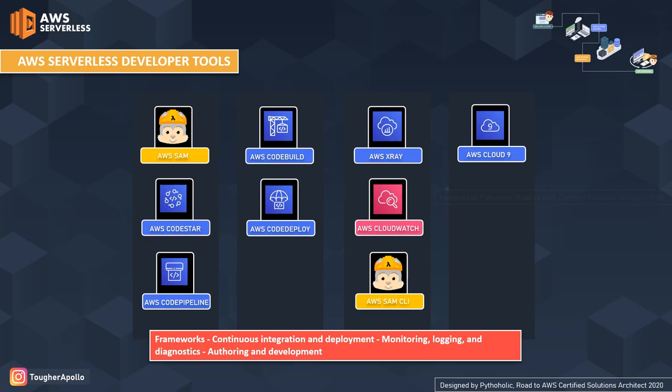Along with AWS Serverless computation, we also have AWS Serverless developer tools. For the serverless framework we have AWS SAM, also known as AWS Serverless Application Model. For continuous integration and deployment we have AWS CodeStar, AWS CodePipeline, AWS CodeDeploy, and AWS CodeBuild. For monitoring, logging, and diagnostics we have AWS CloudWatch and AWS X-Ray. For authoring and development we have AWS Cloud9 and AWS SAM CLI.